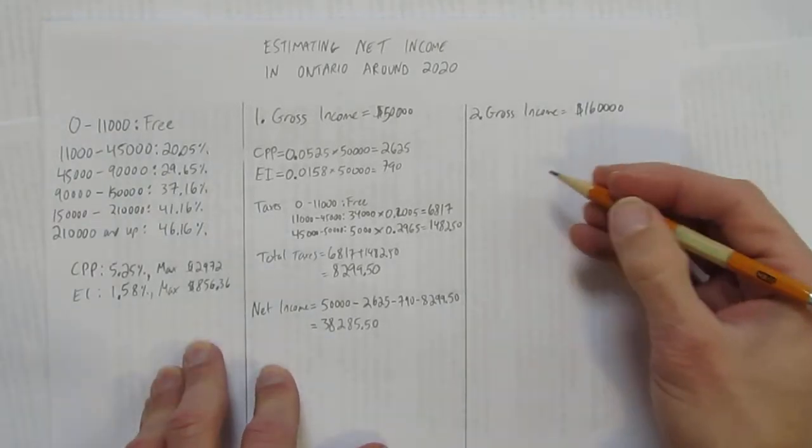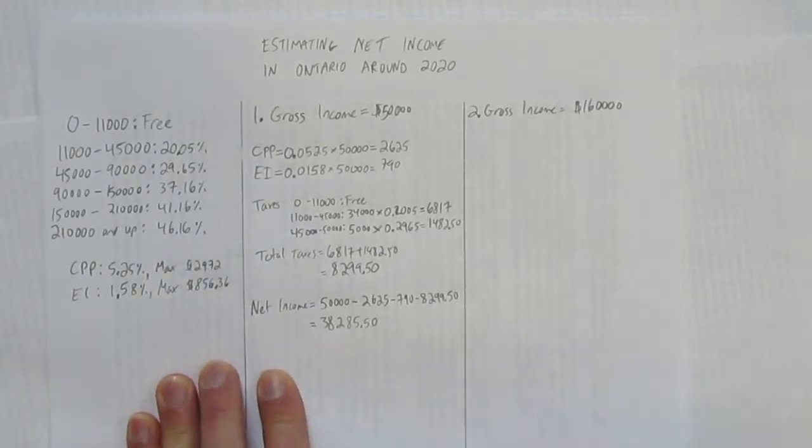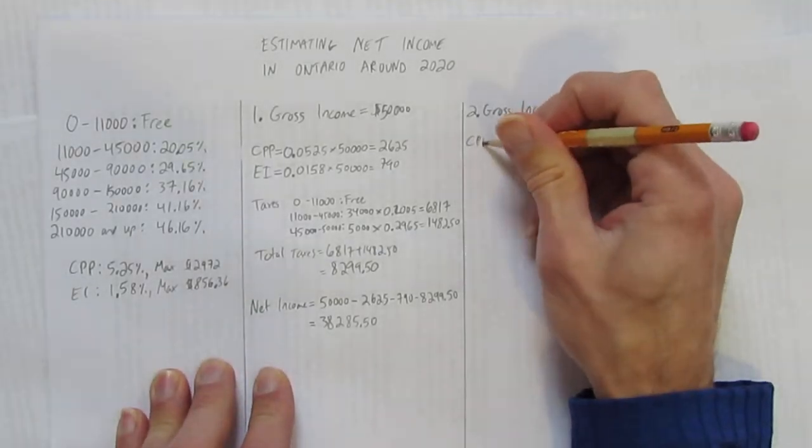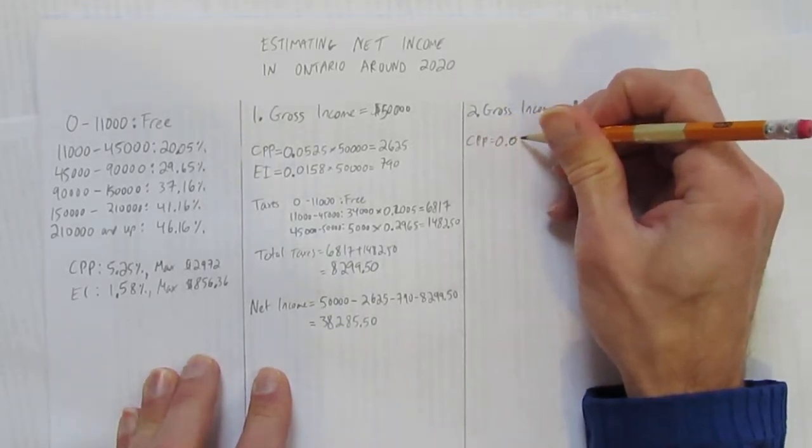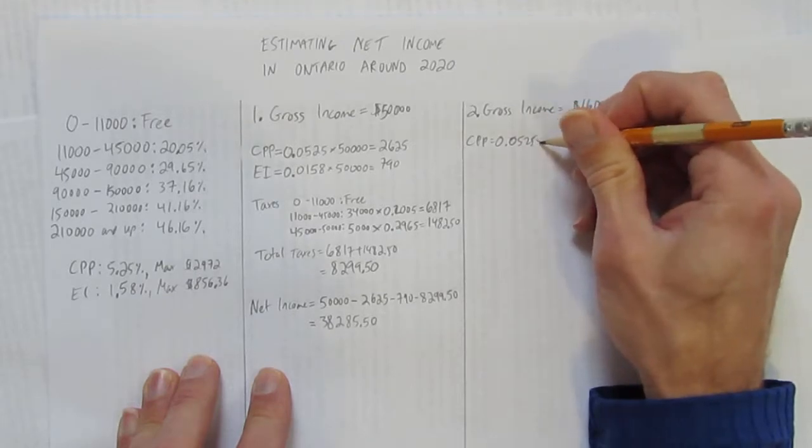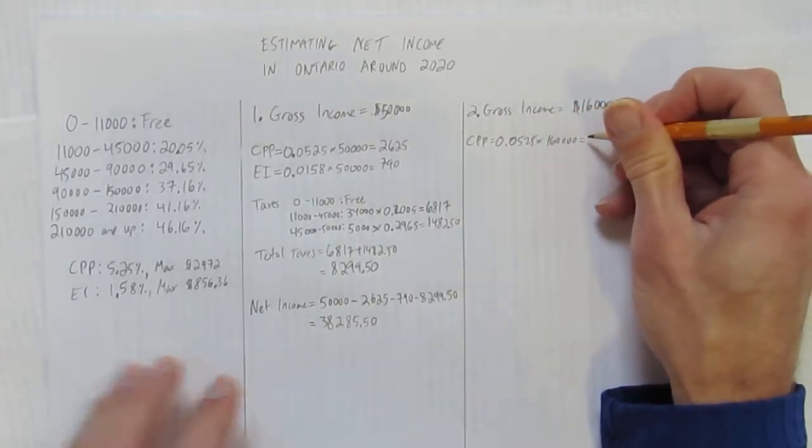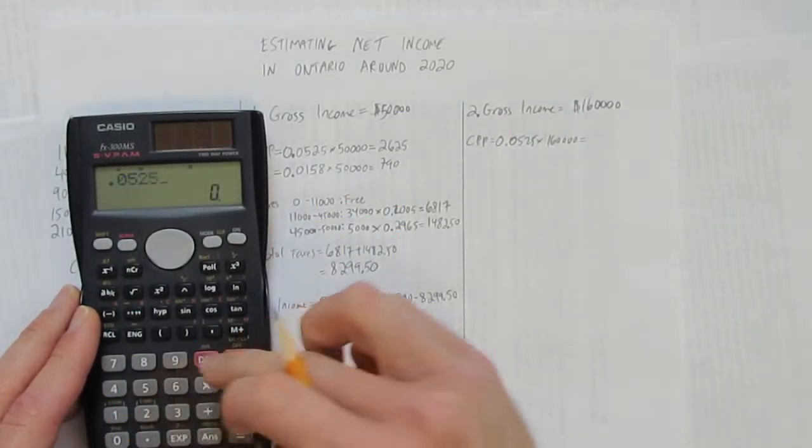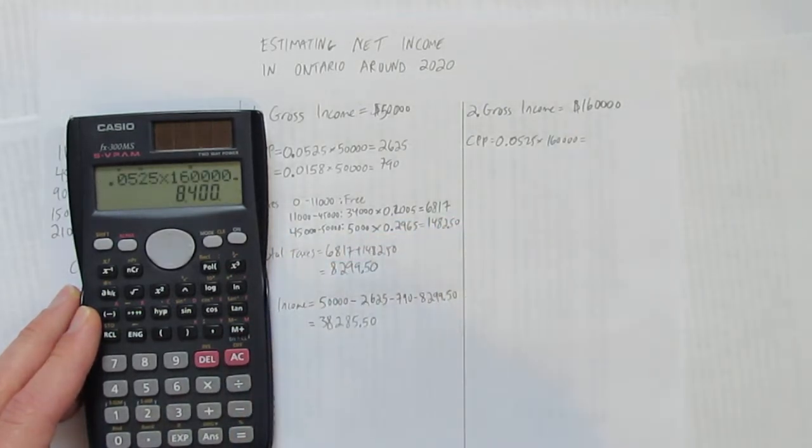But what if your income was a bit higher? Say it was $160,000. Let's calculate that one. It's going to be a bit more for taxes. Your CPP would be 0.0525 again, times $160,000. But watch carefully. I'm going to do that math, but then something else happens. 0.0525 times $160,000, it comes out to $8,400.